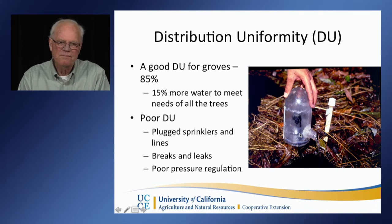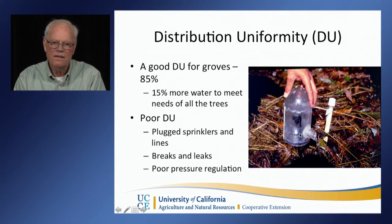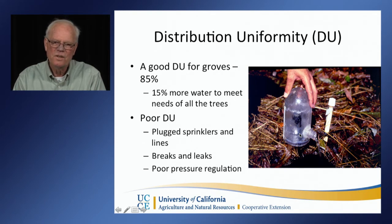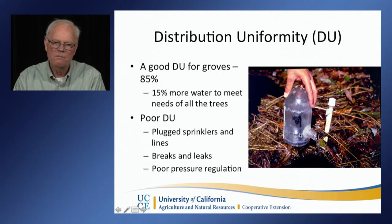Distribution uniformity: a good distribution uniformity is 85%, meaning 85% of the irrigation emitters are putting out the same amount of water — 7.5% getting more than average and 7.5% getting less. The problem is you tend to run the system at a higher rate to compensate for trees getting the lowest water amount, and in compensating you end up adding about 15% more water — that's 15% that could be saved.